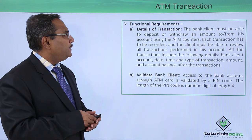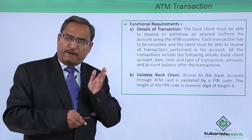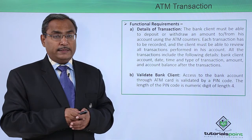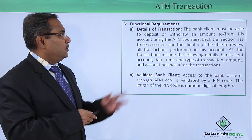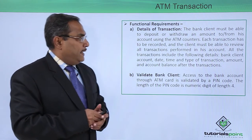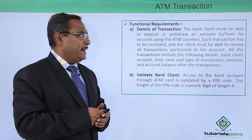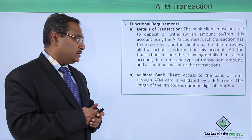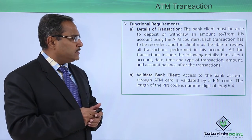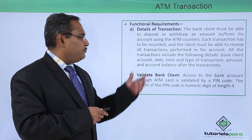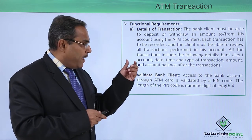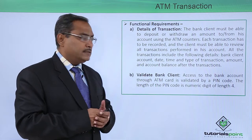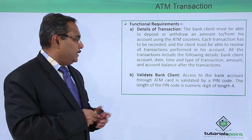We have gone through the problem statement, so now we will have two sections: functional requirements and non-functional requirements. Through this discussion you will also get an idea of the difference between functional and non-functional requirements. For functional requirements, regarding details of the transaction: the bank client must be able to deposit or withdraw an amount to or from his account using the ATM counters. Each transaction must be recorded and the client must be able to review all transactions. All transactions include the following details: bank client account, date, time, type of transaction, amount, and account balance after the transaction.